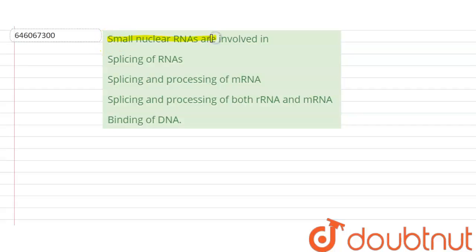Small nuclear RNAs are involved in: our options are splicing of RNAs, splicing and processing of mRNA, splicing and processing of both rRNA and mRNA, or binding of DNA. So in this question we are talking about snRNA.